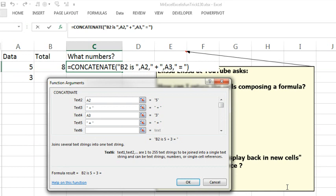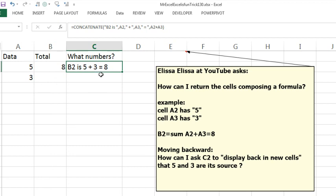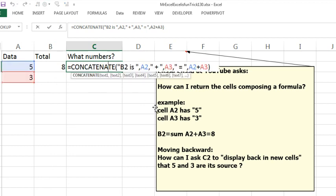And then how about SUM open parentheses, or no, not SUM, just this cell, plus symbol, this cell, so I put a formula there too, and so now we can see the result there. So now it says B2 is 5 plus 3 equals 8, wow, that's pretty good.